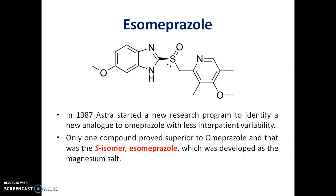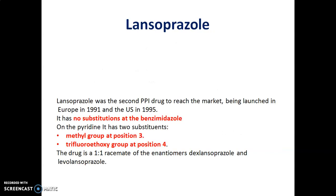The next drug is esomeprazole. Esomeprazole is the S-isomer of omeprazole, developed as a magnesium salt in 1987 by Astra, and it was found to have less interpatient variability compared to omeprazole.